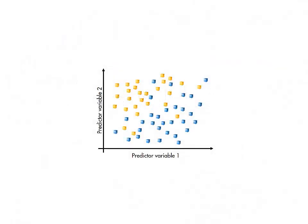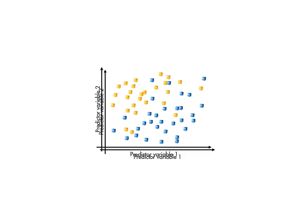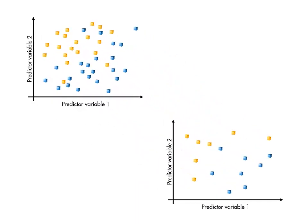A simple way to test how well a model generalizes to new data is hold-out validation. Split the data randomly into a training set and a validation or test set.